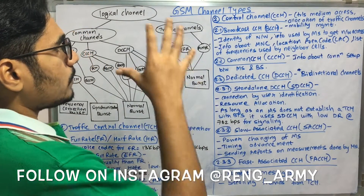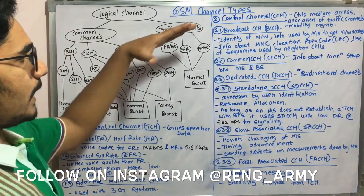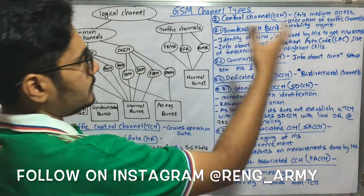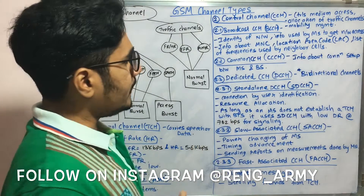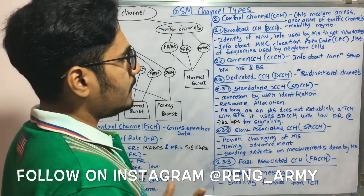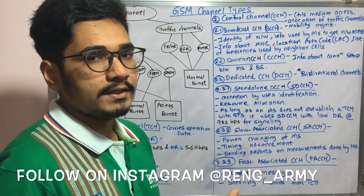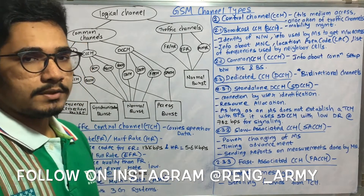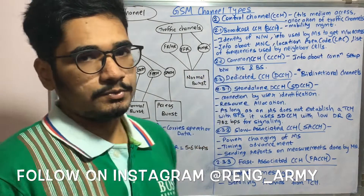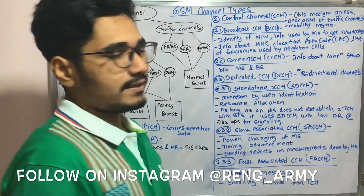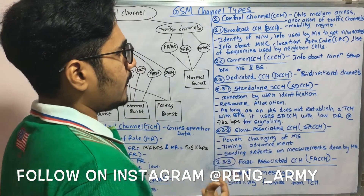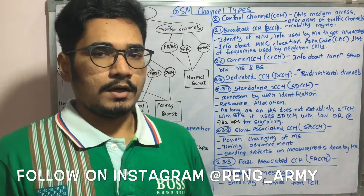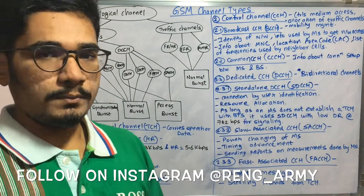The control channel has three types. First is the Broadcast Control Channel (BCH/BCCH), used for network identification. The mobile station (MS) uses this information to gain network access. It provides the Mobile Network Code (MNC) used in the IMSI, the Location Area Code (LAC), and the list of frequencies used by neighboring cells in the honeycomb structure.